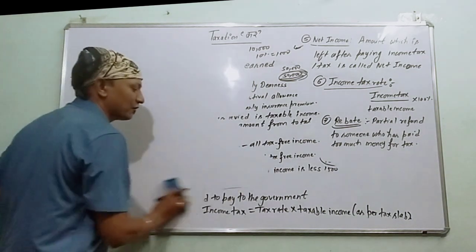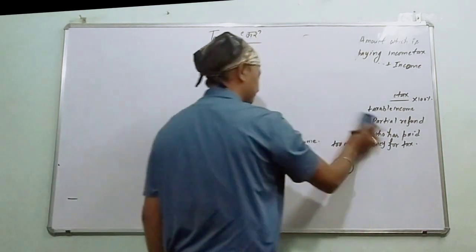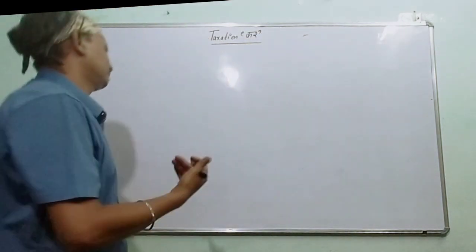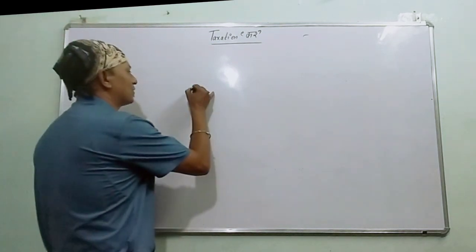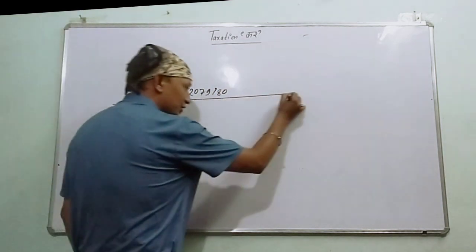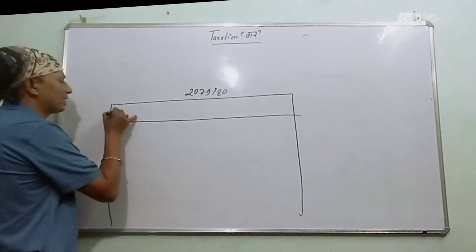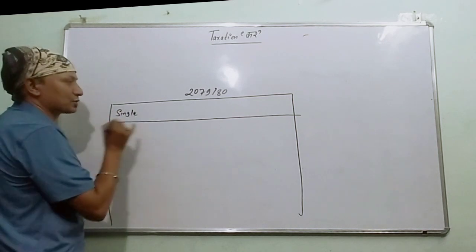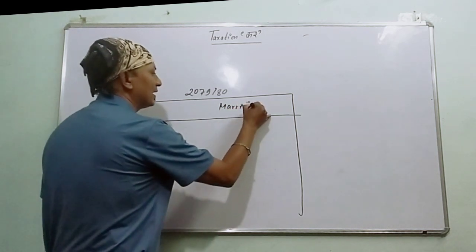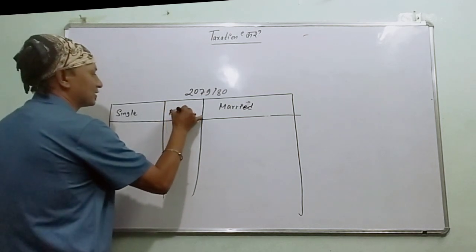Now you can solve problems. In the question, there are tax slabs. The questions are based on the 2079-80 fiscal year. You can refer to it in the book. You have categories: a single person, or a married couple. You can see the tax slab, the round, and the tax rate in the book.